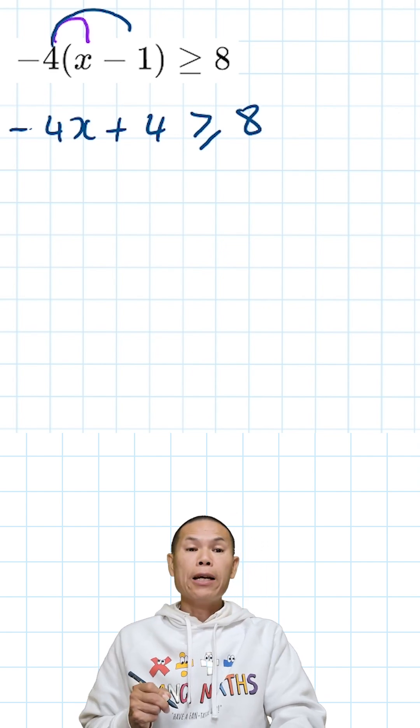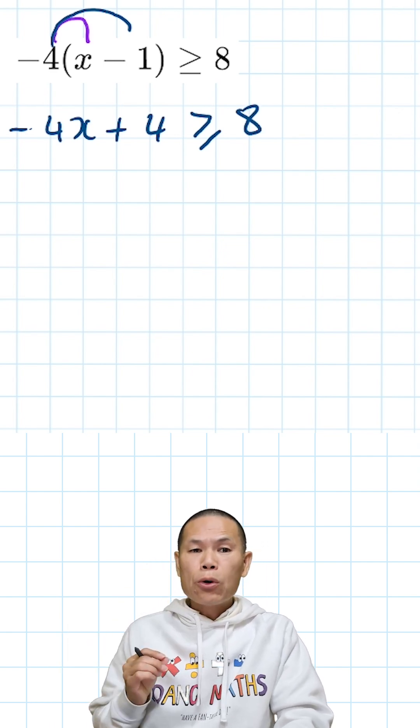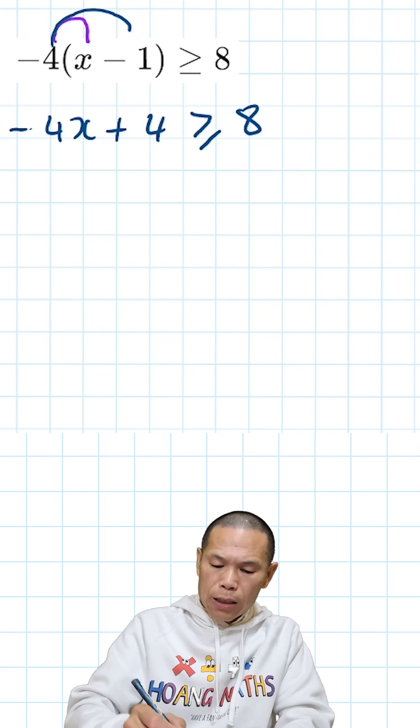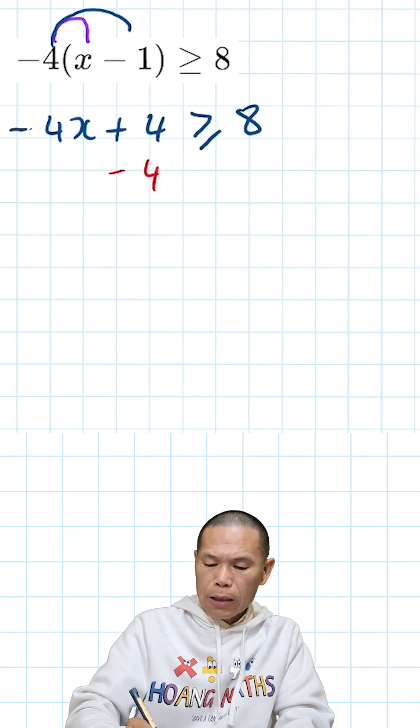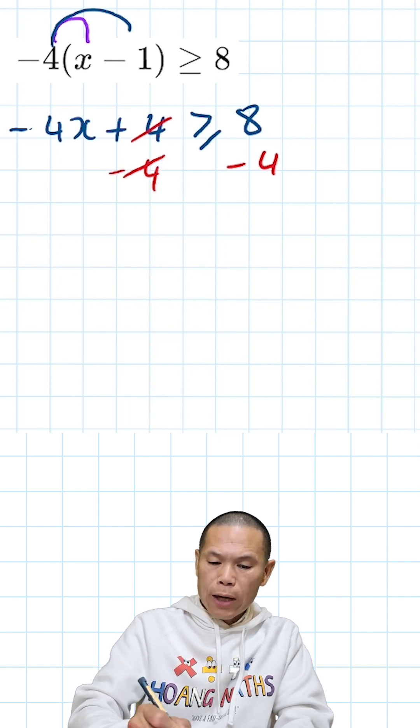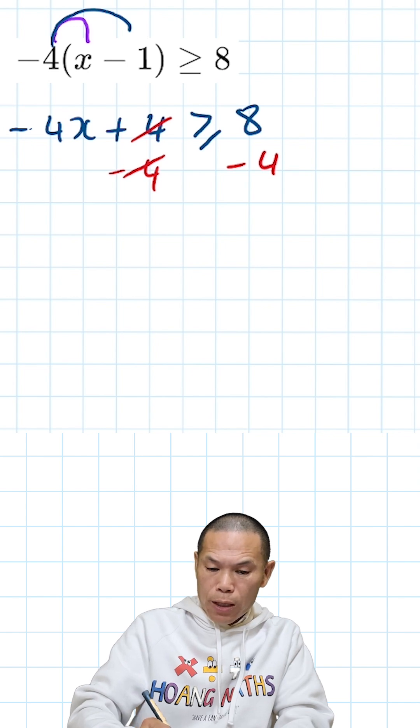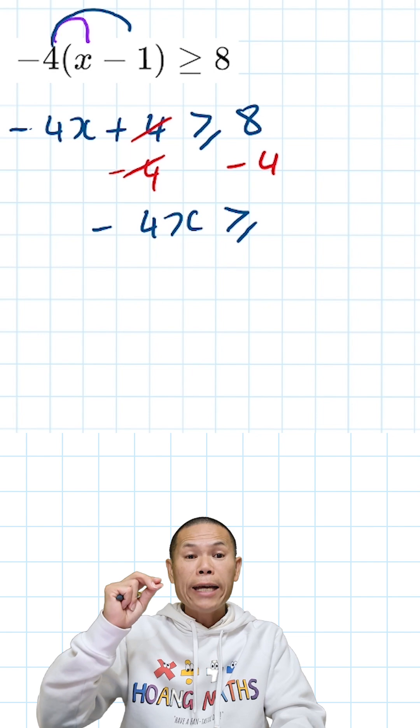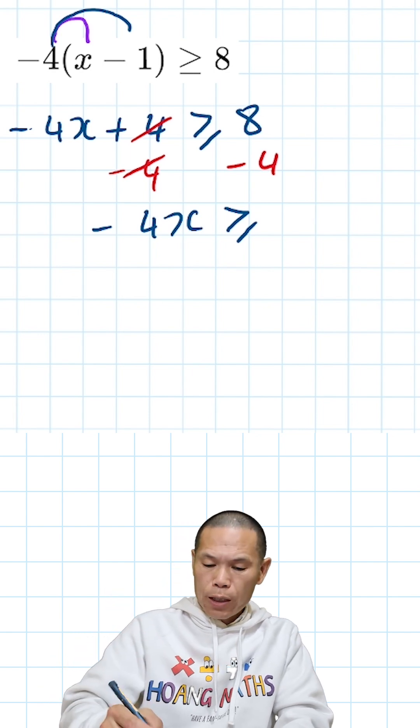I can minus 4 on both sides. If I minus 4 and minus 4, these fours cancel out, so I'm left with negative 4x is greater than or equal to 8 minus 4, which is 4.